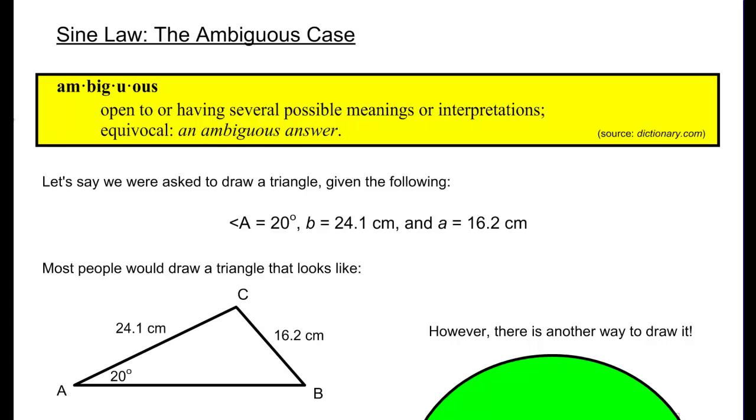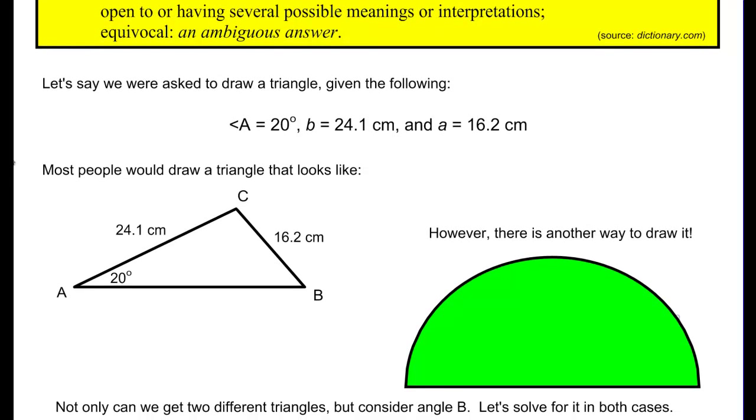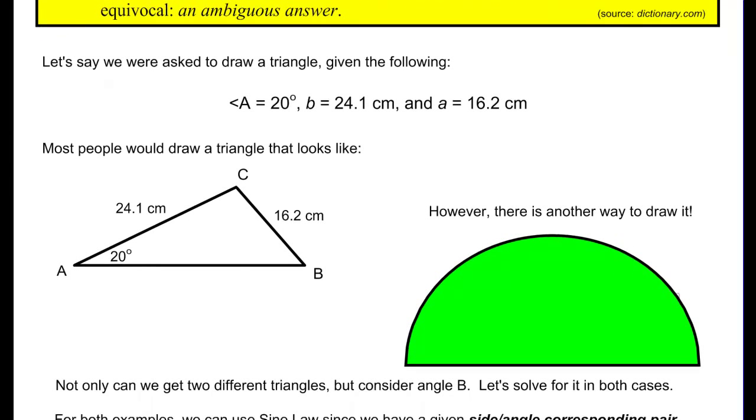So here's the example that I've given. Let's say we were asked to draw a triangle and we've been given the following information. We've been told that angle A is 20 degrees, side B is 24.1 centimeters, and side A is 16.2 centimeters. Now it's important to realize here that side A has to be across from the triangle from angle A. Those two things are corresponding to each other.